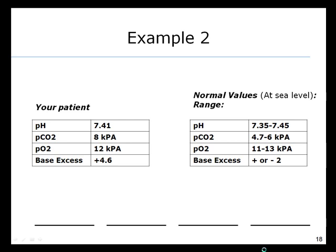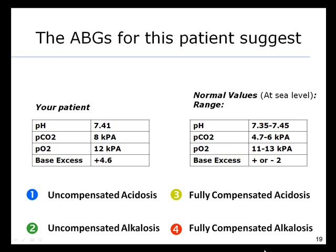Here's a little question to get you starting thinking. The arterial blood gases for this patient might suggest: 1. uncompensated acidosis, 2. uncompensated alkalosis, 3. fully compensated acidosis, or 4. fully compensated alkalosis. Why not take a few seconds to determine an answer and commit to that answer by writing it down.